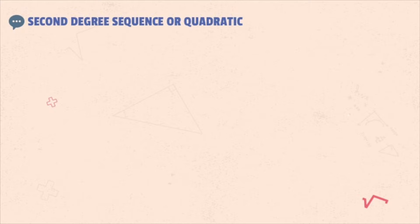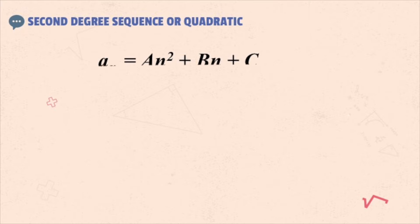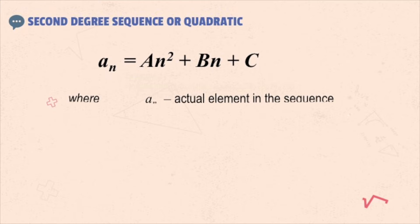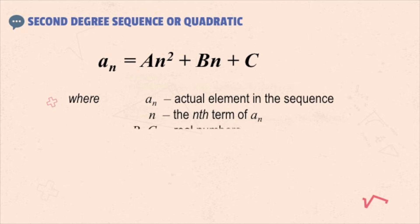Let's have now the second degree sequence, also known as quadratic. The reference general formula here is a·n² + b·n + c, from the quadratic standard form, where a_n is equal to the actual element in the sequence, n is the n-th term of a_n, and a, b, c are all real numbers.